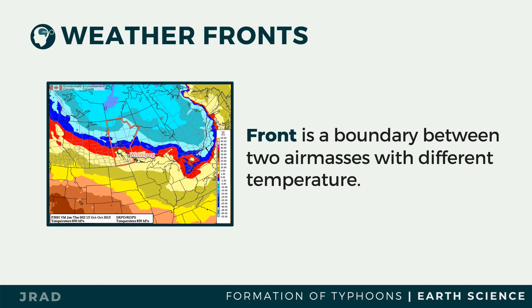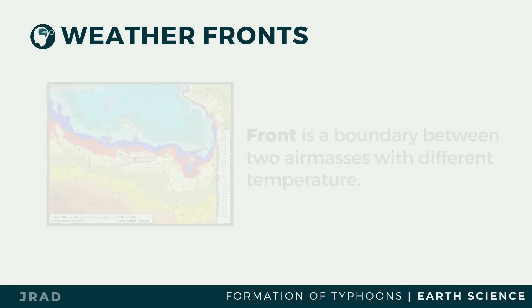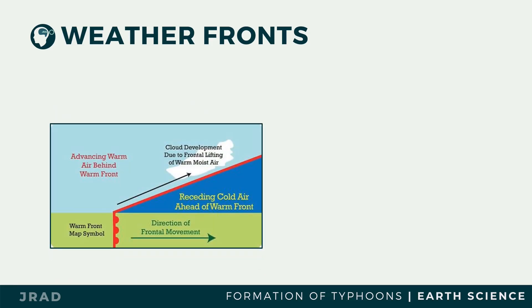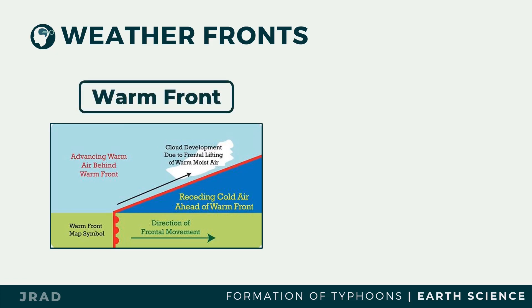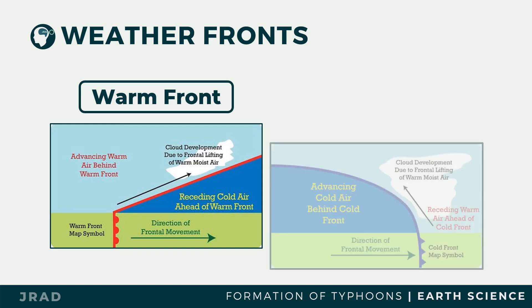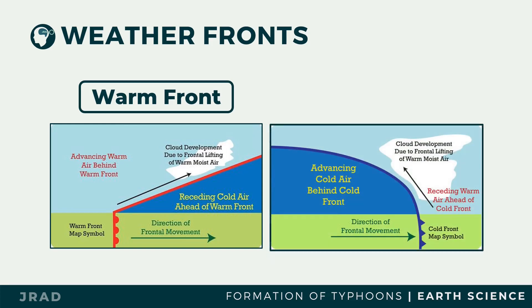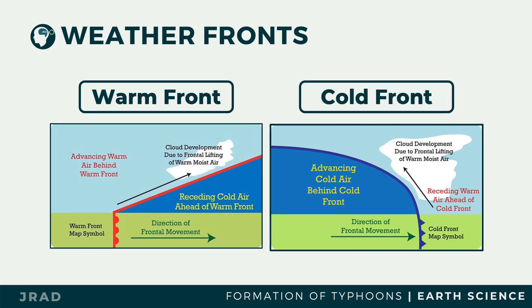When warm air advances over cold air, or the cold air retreats as the warm air pushes over it, the boundary between the two air masses is called a warm front. Similarly, when cold air pushes under a warm air mass, thereby lifting it, the boundary between the two air masses is called a cold front.